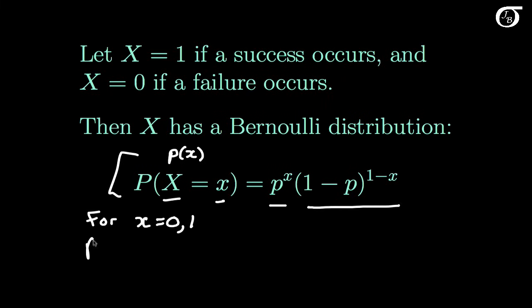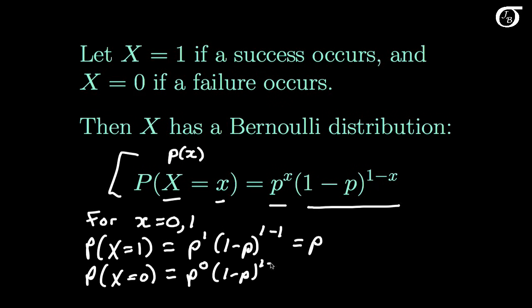And if we were to write this out for the individual values, we'd see that the probability the random variable x takes on the value 1 is equal to p to the 1, 1-p to the 1-1, which is just equal to p. And the probability that the random variable x takes on the value 0 is equal to p to the 0, 1-p to the 1-0, which is just 1-p. The probability of success and the probability of failure that we talked about previously.